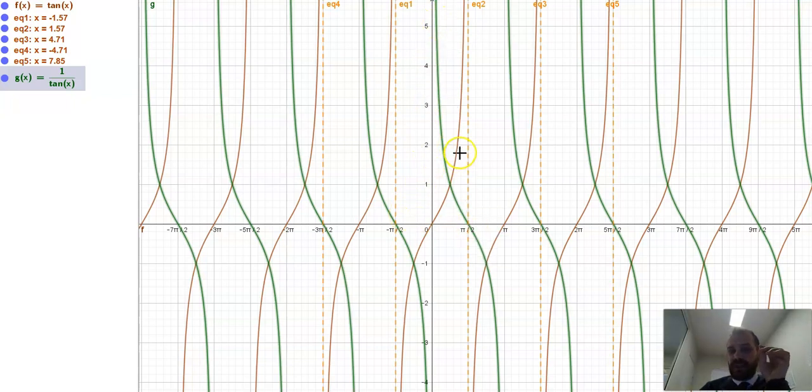Where the tan function, where the brown function has an asymptote, the green function has a root. Okay, so we're kind of reversing here. Where the tan function is strictly increasing, you can see it's always increasing, always increasing. The green function is always decreasing.